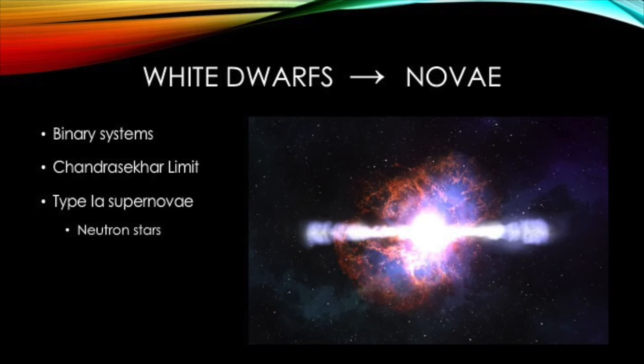A more extreme type of explosion is called a type 1A supernova, and it can occur if a few key conditions are met. The Chandrasekhar limit represents the point at which a white dwarf cannot exert enough outward pressure to combat its own gravity. If a white dwarf is already near its Chandrasekhar limit, and its companion in a binary system dumps hydrogen onto it, a supernova explosion will occur. If this explosion is extreme enough, a neutron star is formed.